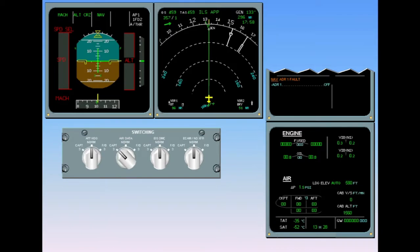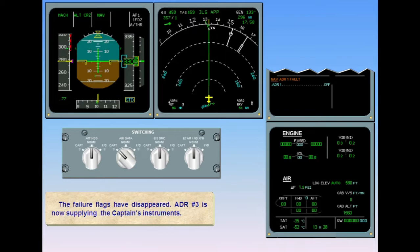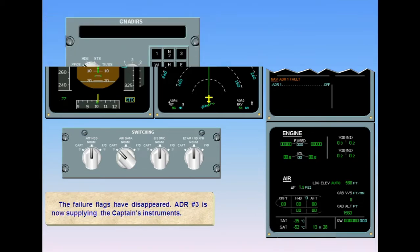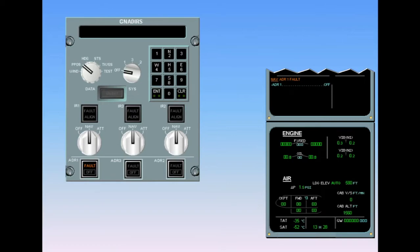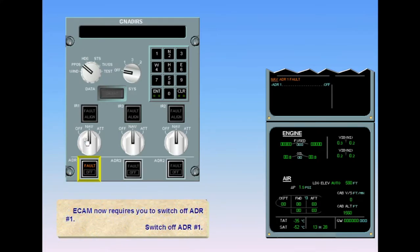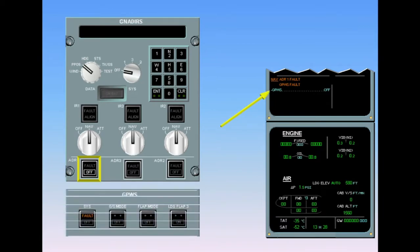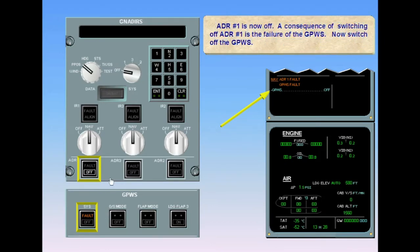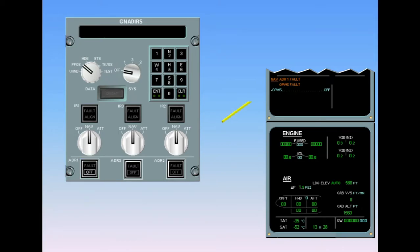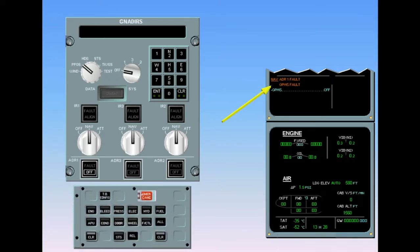The failure flags have disappeared. ADR number three is now supplying the captain's instruments. ECAM now requires you to switch off ADR number one. Switch off ADR number one. ADR number one is now off. A consequence of switching off ADR number one is the failure of the GPWS. Now switch off the GPWS — the ground proximity warning system. Now we can clear the ADR fault — clear the nav ADR fault.